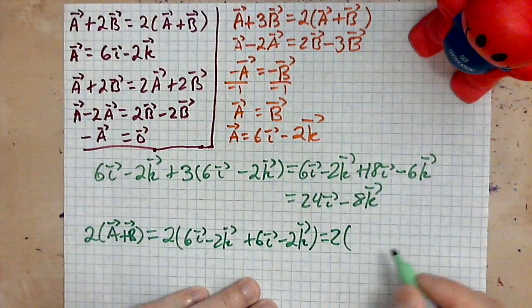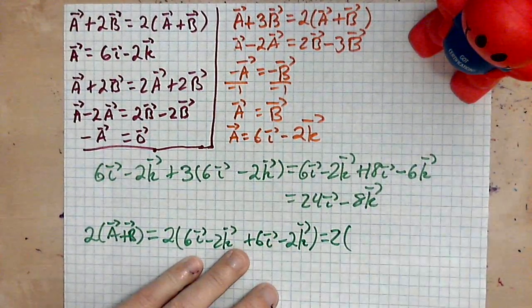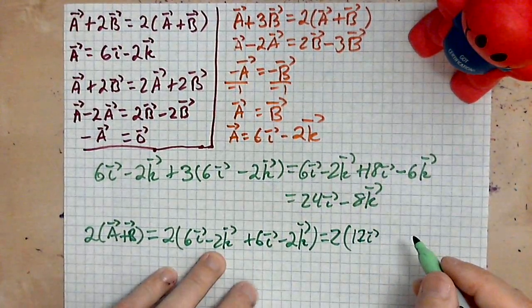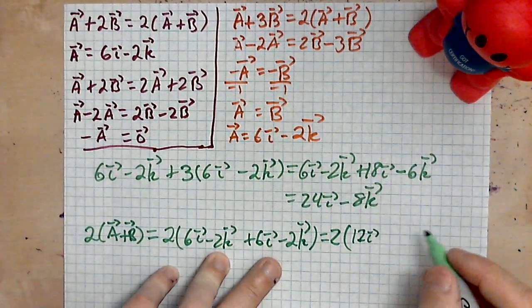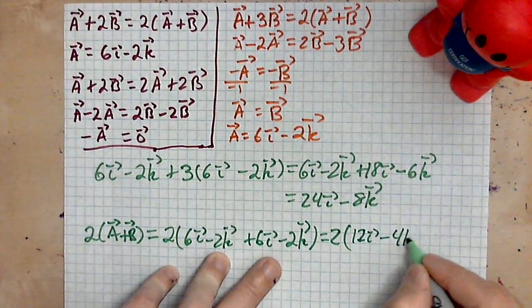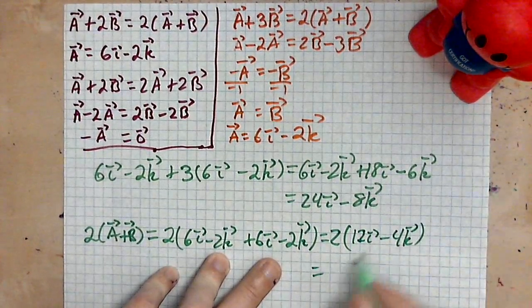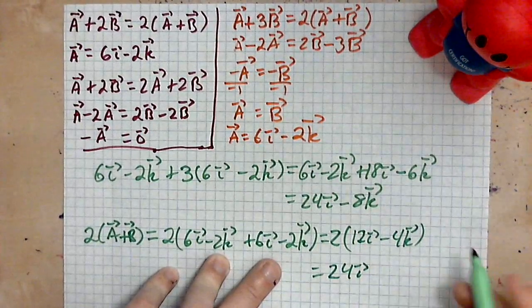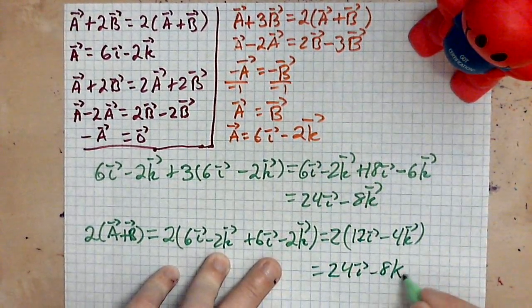Combined within the parentheses first, so 6i and 6i is 12i, and then negative 2k minus 2k, of course, is negative 4k. And guess what, 2 times 12i is 24i, 2 times negative 4k is negative 8k.